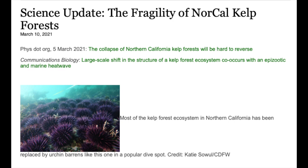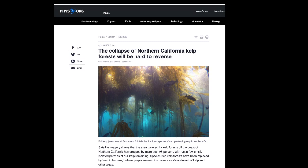The phys.org paper is titled, The Collapse of Northern California Kelp Forests Will Be Hard to Reverse. When I read something like that, I automatically suspect understatement underway. And probably what this means is that the collapse of Northern California kelp forests will be impossible to reverse, not hard to reverse.